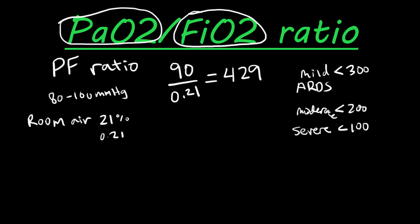Let's do another example. Let's say their PaO2 is below normal at 70, divided by 0.6 because they're on 60% oxygen. That gives us a PF ratio of 117, which is classified as severe ARDS. So the lower the PF ratio, the more severe their respiratory status is.